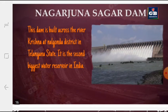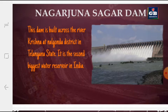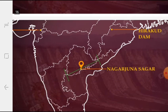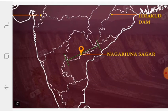Now we come to the Nagarjuna Sagar Dam. This dam is built across the river Krishna at Nalgonda district in Telangana state. The name of the dam is Nagarjuna Sagar Dam, located on the river Krishna in Nalgonda district of Telangana. It is the second biggest water reservoir in India. Mark its location on the map as shown.